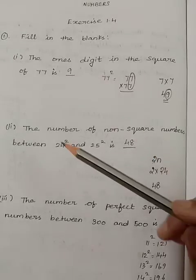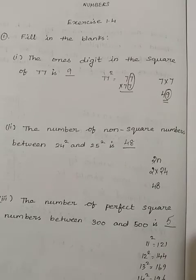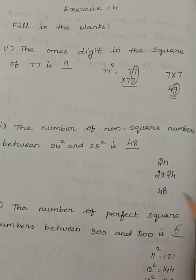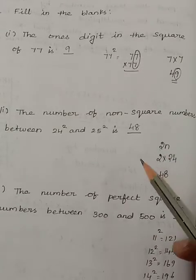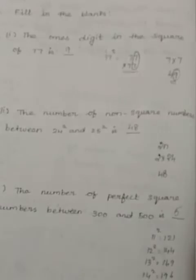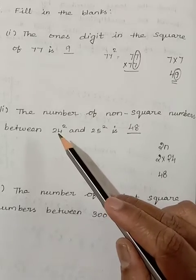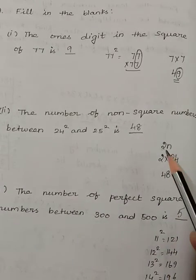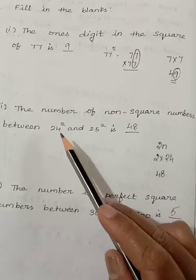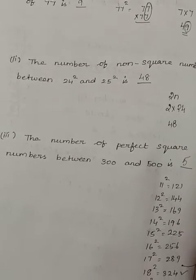Second question: The number of non-square numbers between 24 square and 25 square is? For non-square numbers, the formula is 2n. Compare the numbers 24 and 25. Which is the least number between the two? 24. So in the place of n, we have to write that number. So 2 into 24, 48 is your answer.